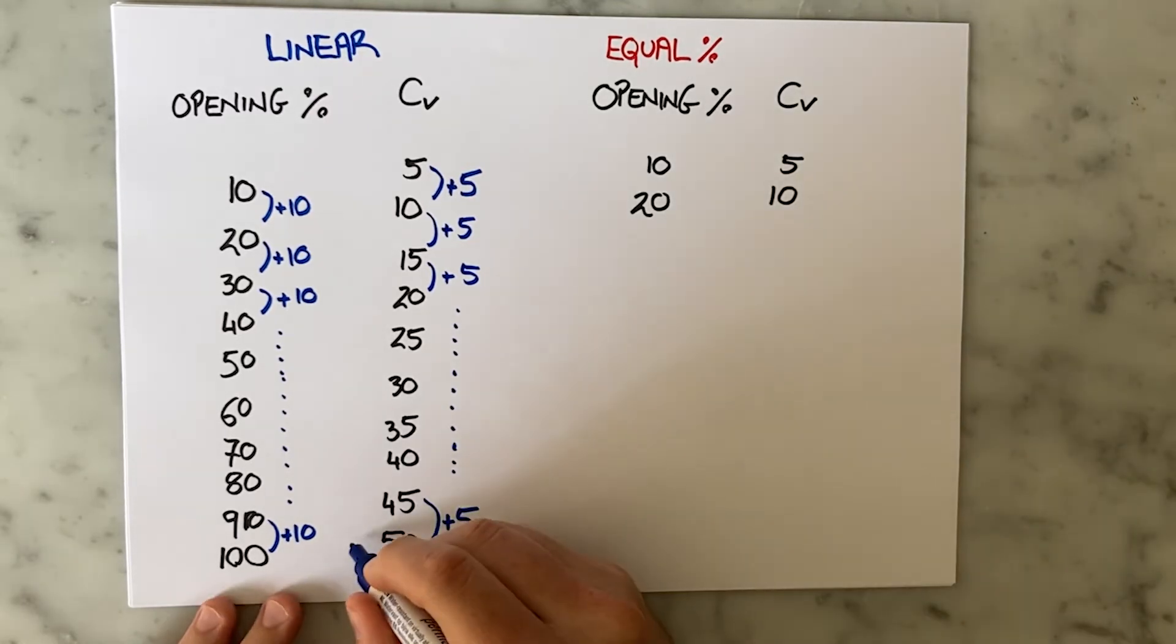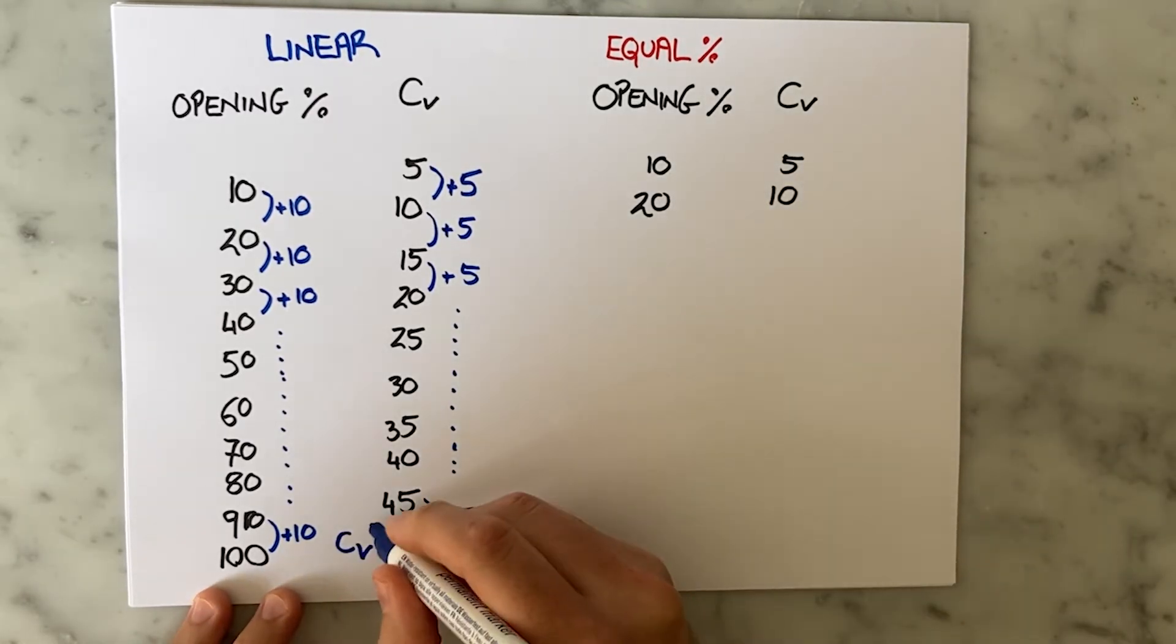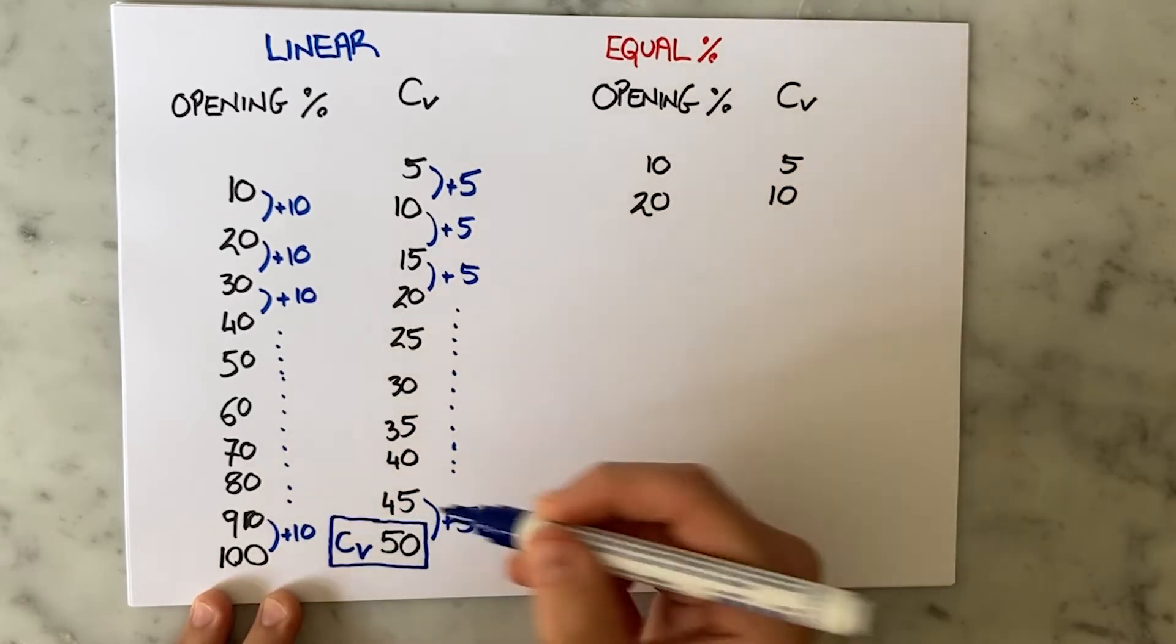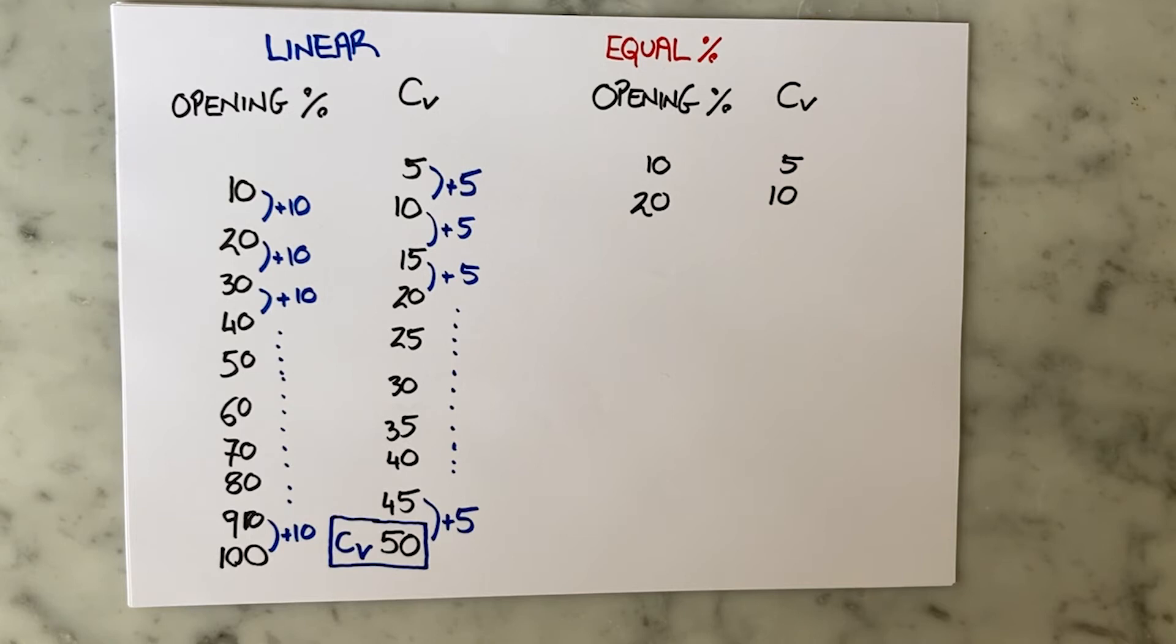The CV that is quoted on a datasheet is the 100% open or full bore CV value. So if you own this valve you would be the proud owner of a CV 50 valve with a linear characteristic.